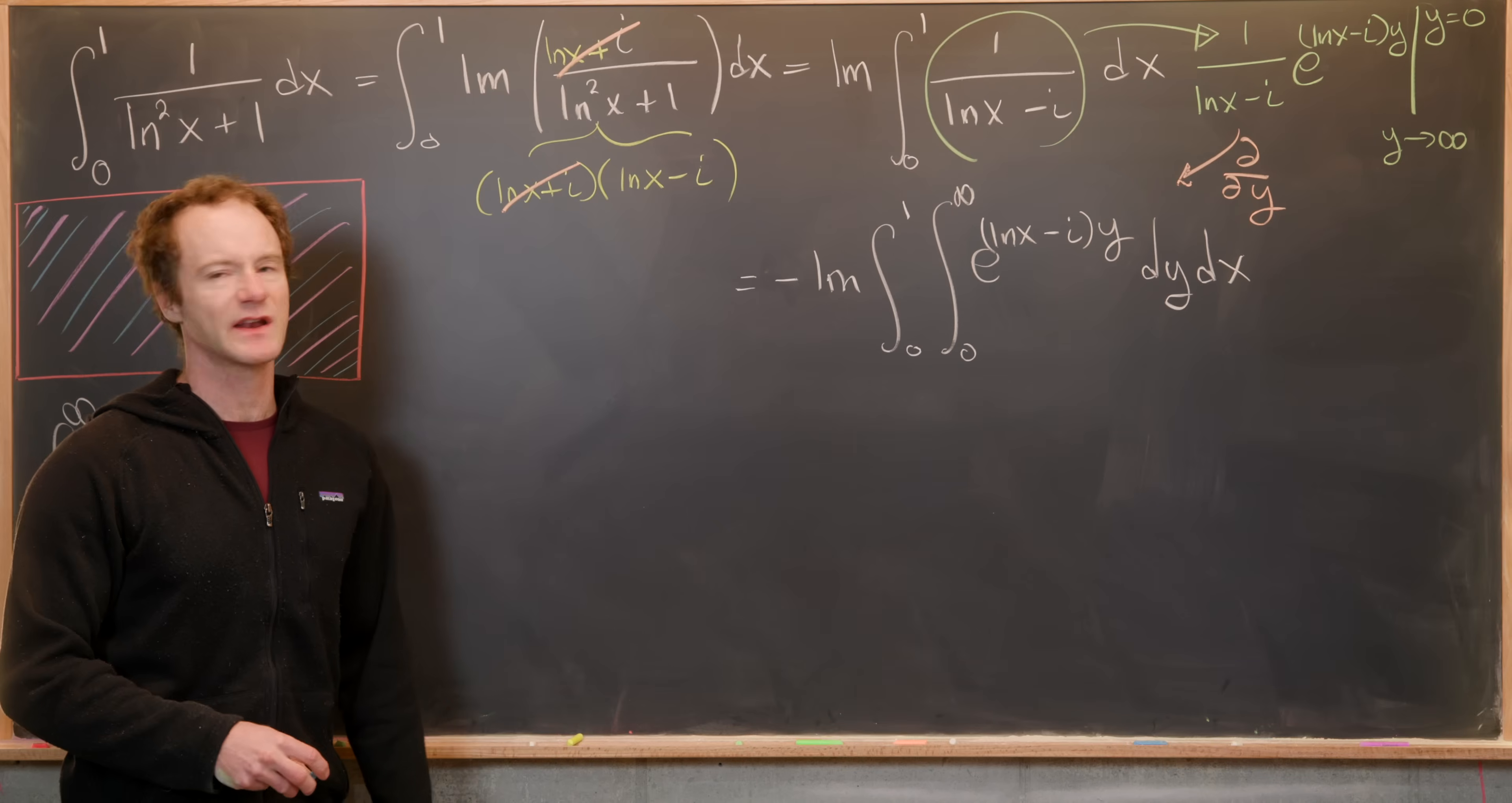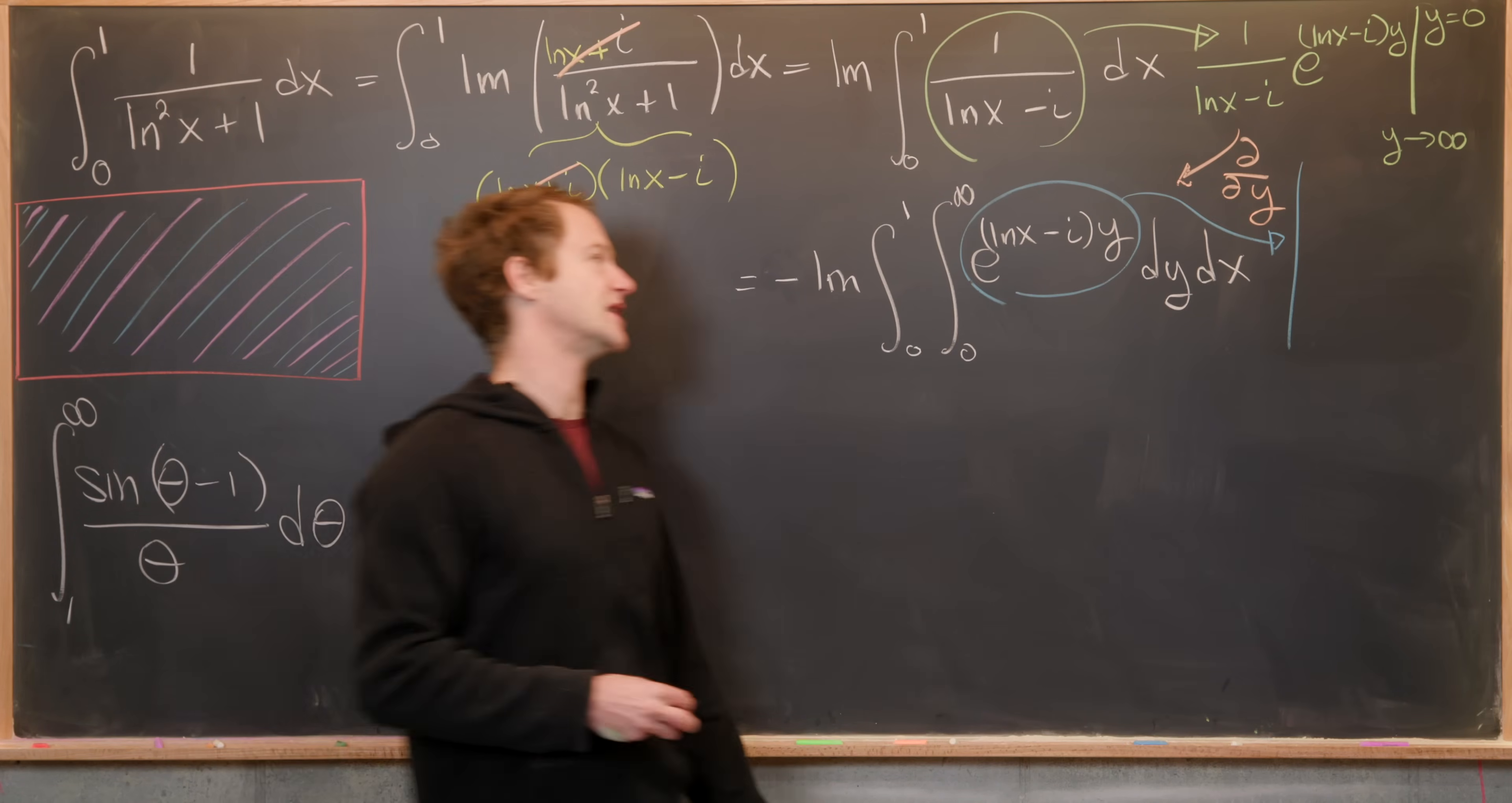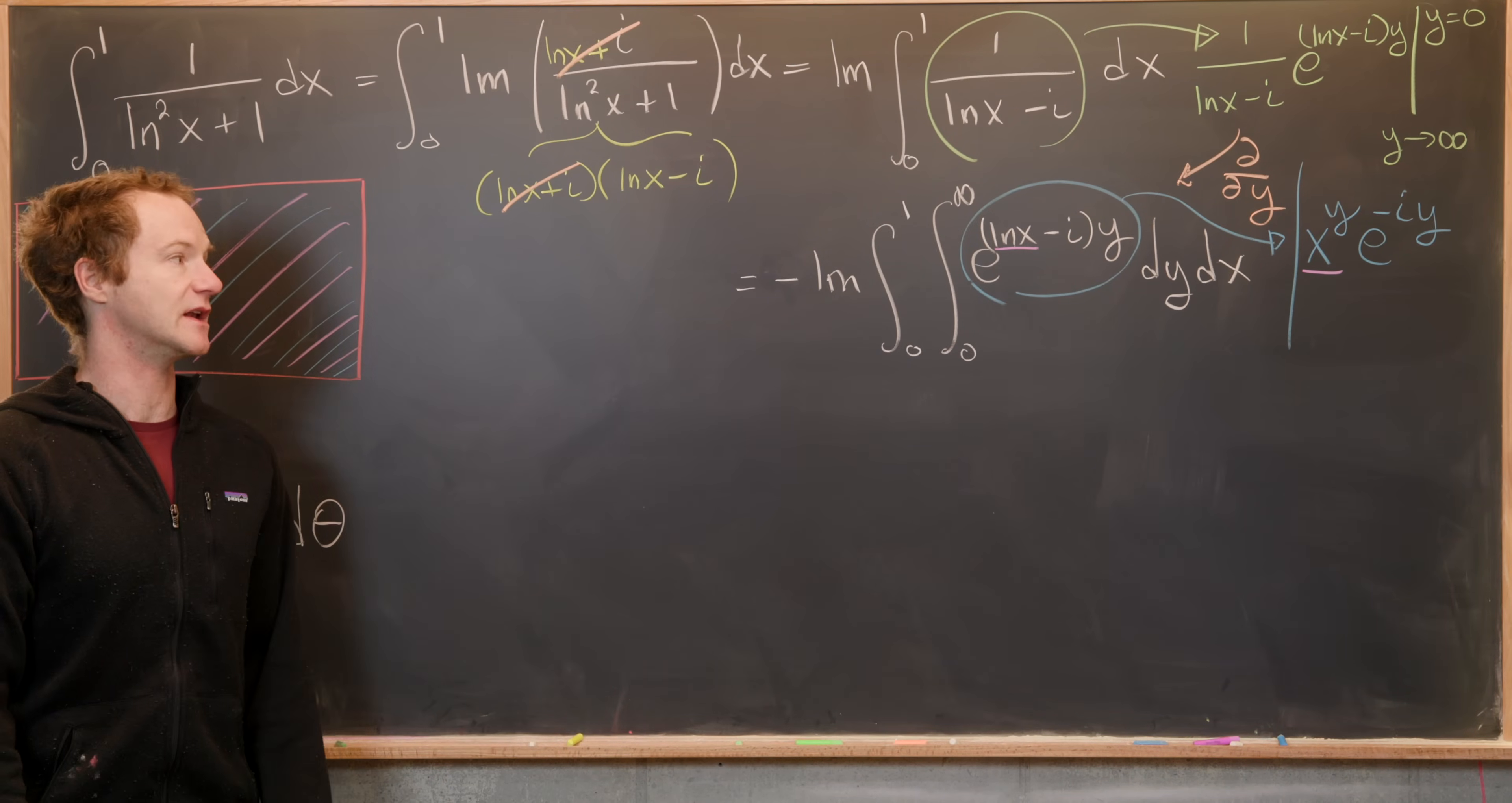Now I want to simplify this integrand a little bit so it looks like a more common function. I can do that by taking this and breaking it apart into two pieces, e^(ln(x)·y). But e^(ln(x)) is just x. But that's being exponentiated by y. So this gives us x^y like that. That's actually going to be pretty easy to work with. And then we'll have e^(-iy), we can't do much with that. This guy right here helped us form this one right here.